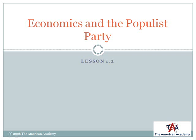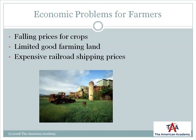Lesson 1.2: Economics and the Populist Party. In the late 1800s, many farmers were trapped in a vicious economic cycle. Prices for crops were falling, and farmers often mortgaged their farms so that they could buy more land and produce more crops. Good farming land was becoming scarce, and banks were foreclosing on the mortgages of increasing numbers of farmers who couldn't make payments on their loans.